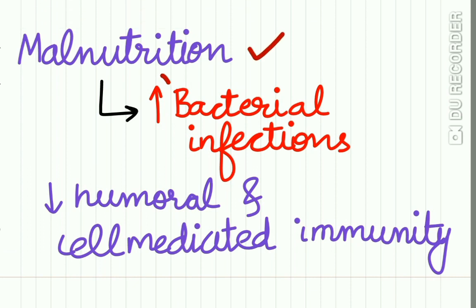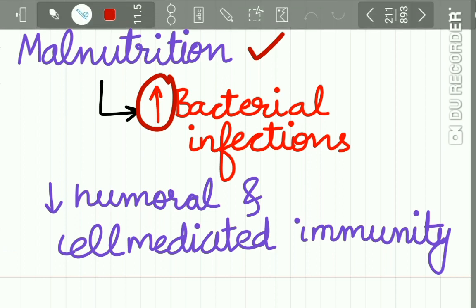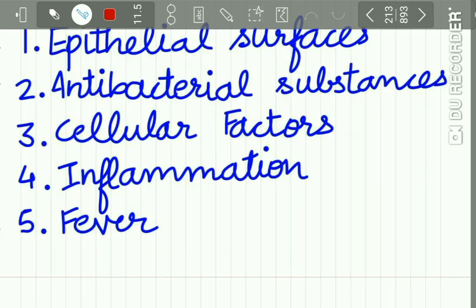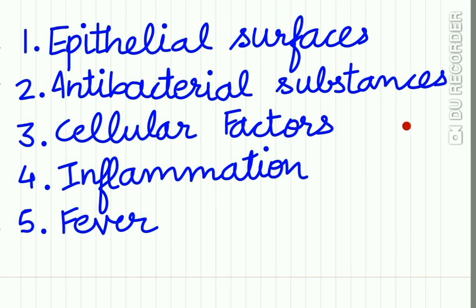The third factor which modifies innate immunity is nutrition. Malnutrition increases the susceptibility to bacterial infections because of reduced humoral and cell-mediated immunity. There are three mechanisms of innate immunity: epithelial surfaces, antibacterial substances, cellular factors, inflammation, and fever.